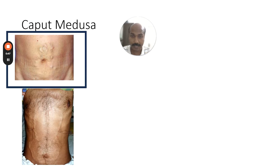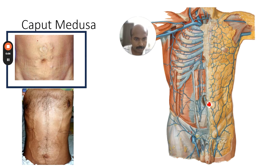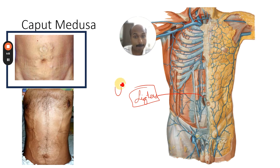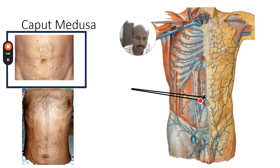The first case is called caput medusa — dilated veins around the umbilicus. Anatomically, the round ligament of the liver, or ligamentum teres hepatis, is the obliterated umbilical vein, which was important in fetal circulation. Around this cord-like structure are very small veins called para-umbilical veins, which communicate with the portal venous system within the liver.